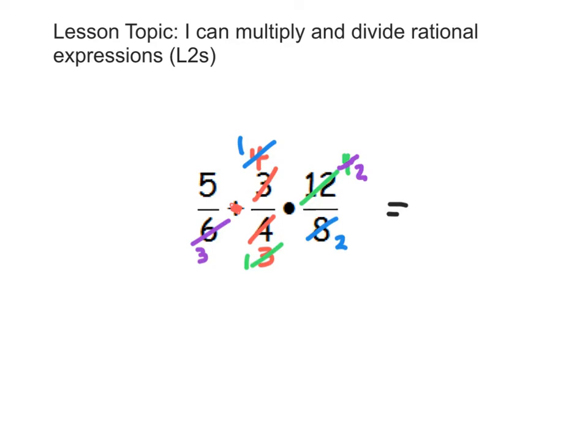Before I actually multiply across the numerators and the denominators, I just noticed that there is actually one additional place that we can simplify. This 2 here and this 2 here makes 1. I believe now we have everything simplified that we could possibly simplify.